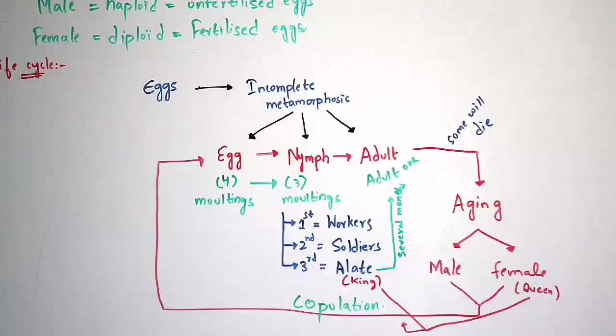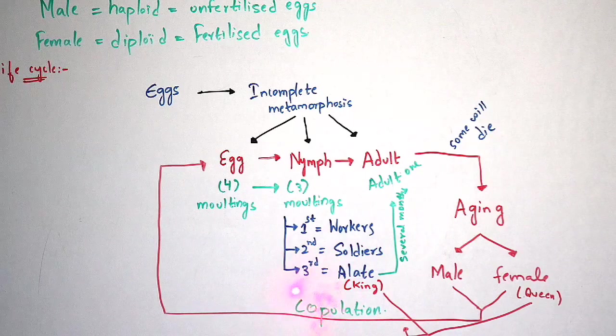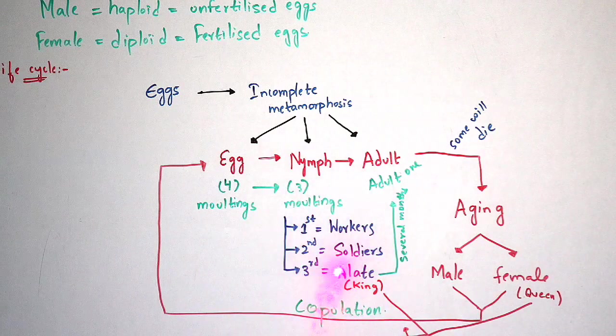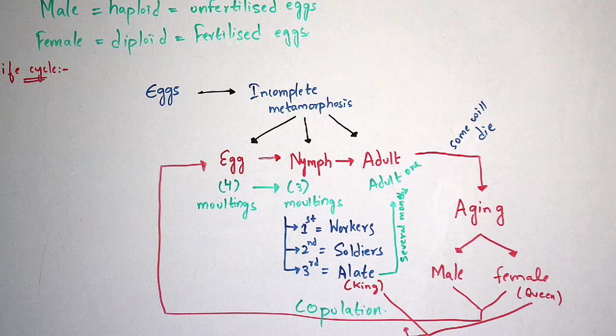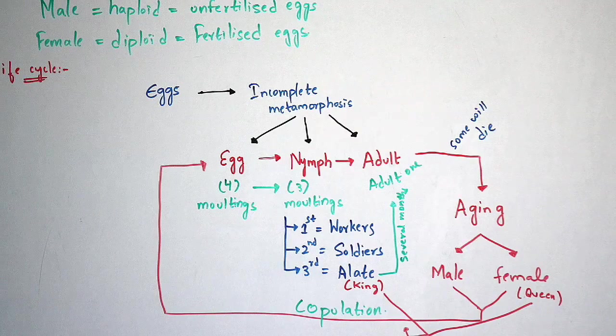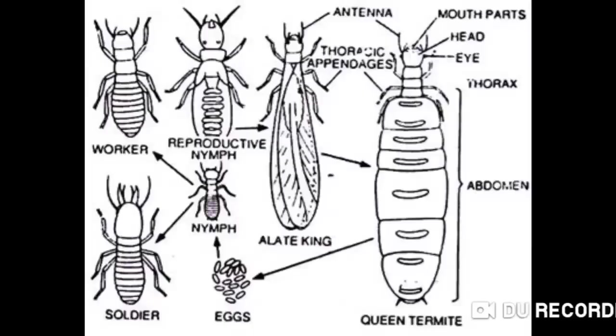One more important thing: after the third stage moulting in the nymph stage, alate termites are formed. This alate termite can also act as king — there are some chances that it acts as king. As it acts as king, the queen undergoes copulation with the allied king and mainly forms eggs, and again the total life cycle gets repeated. This may be a little confusing, so now I will show you the picture so you can understand properly.